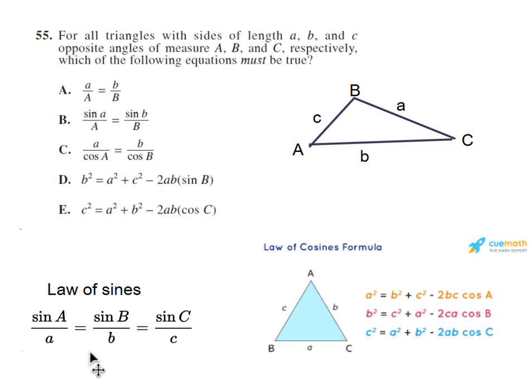So the law of sine can take the sine of an angle over its corresponding side equal to the sine of another angle over its corresponding side. And you can use any two of these ratios to form a proportion.